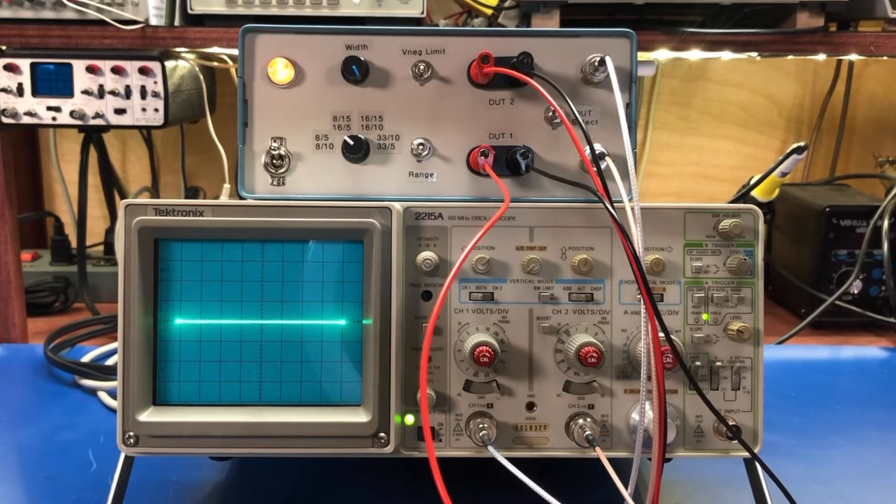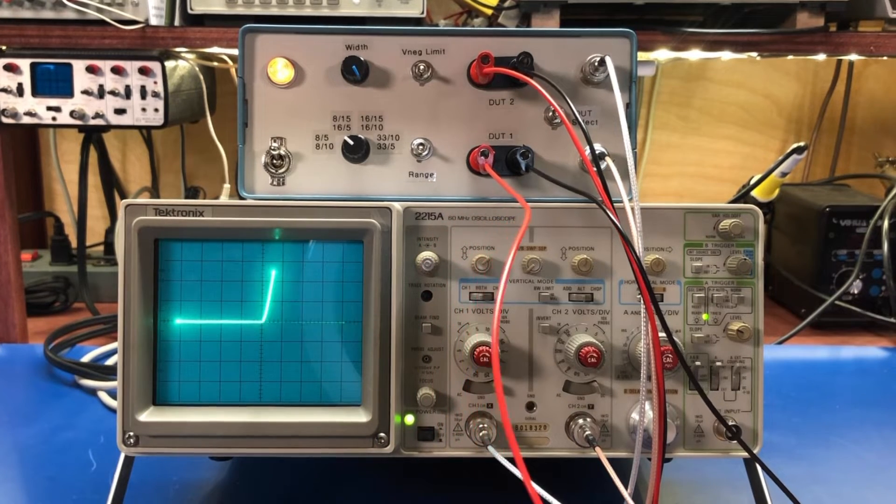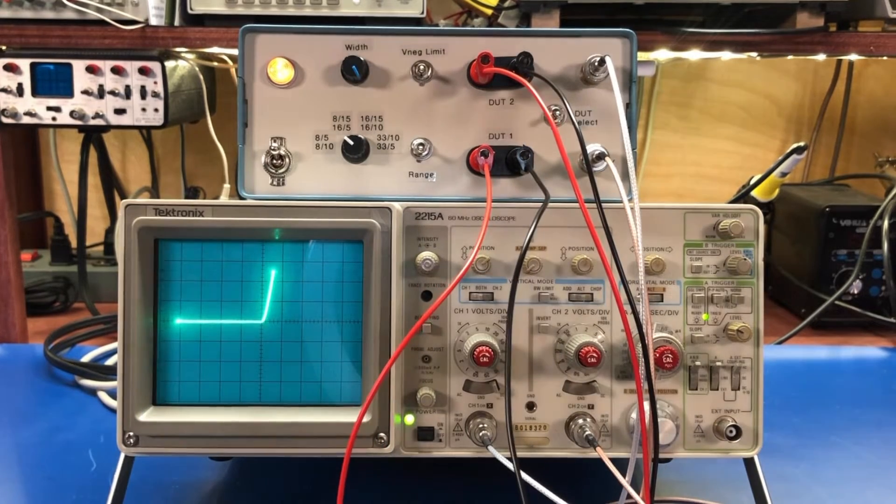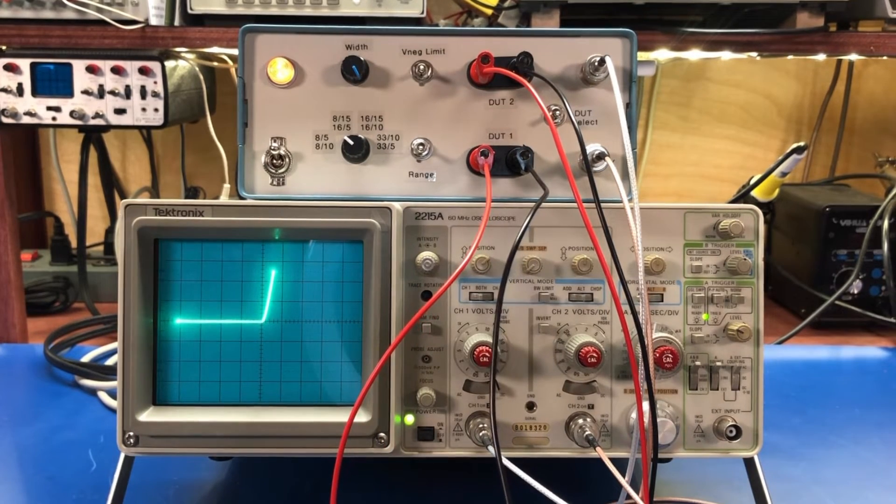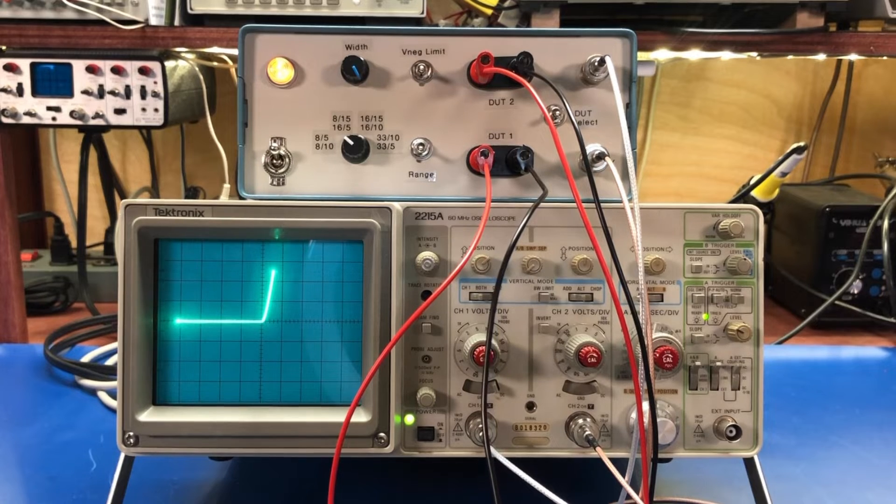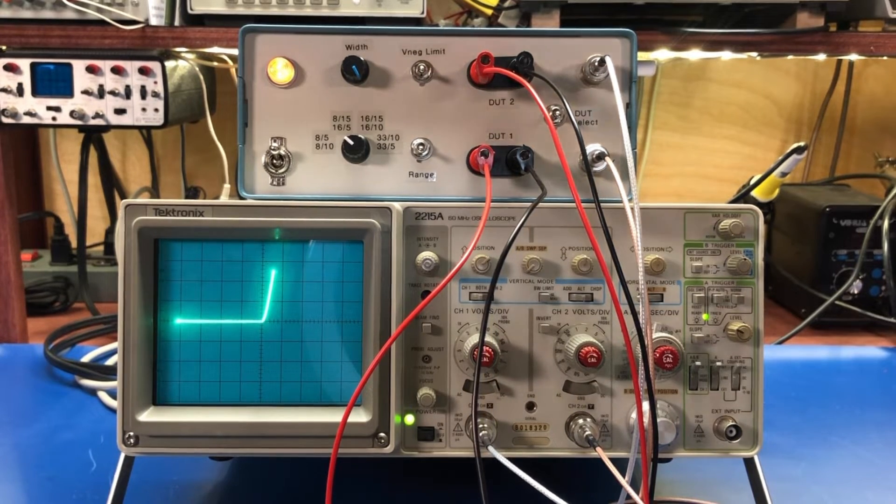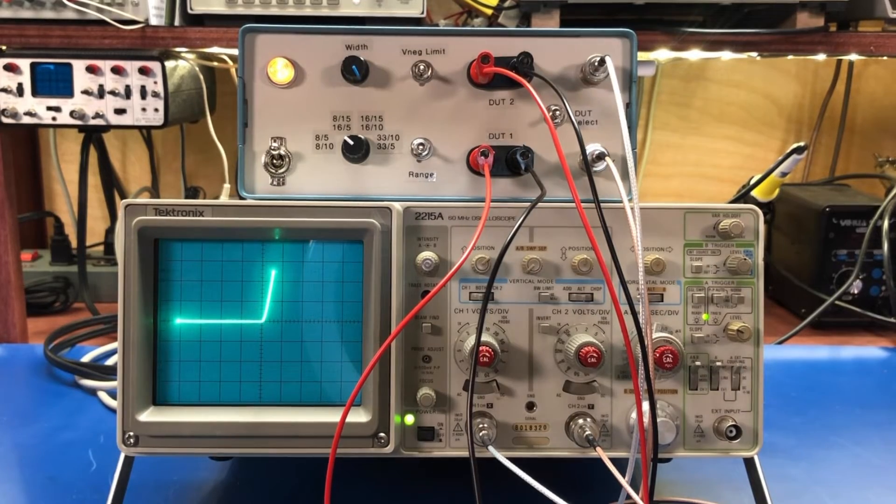We're going to hook up to the diode here. This is the diode I pulled out of some piece of equipment. I don't know anything about it. As we can see, we've got a characteristic diode curve. It's not quite as sharp as most silicon diodes, but it's definitely a diode.